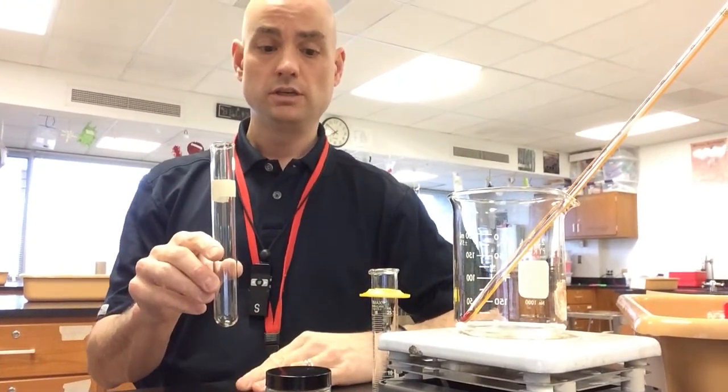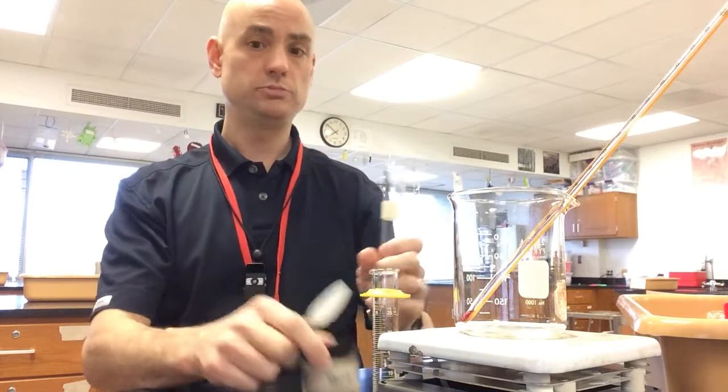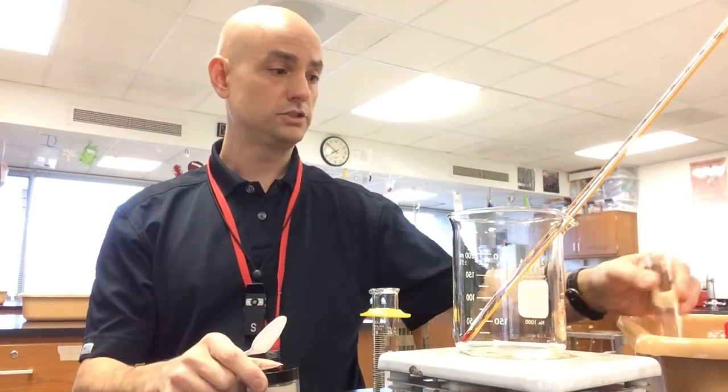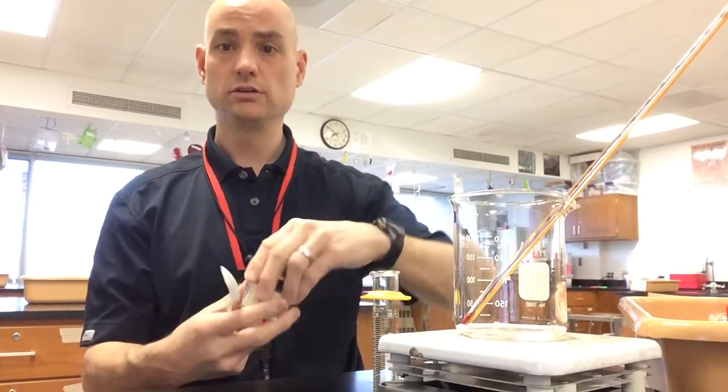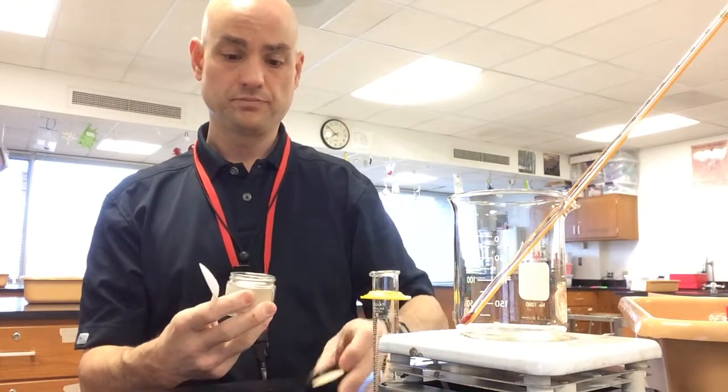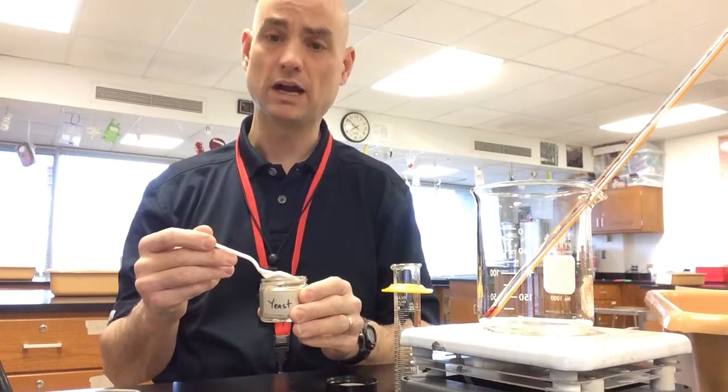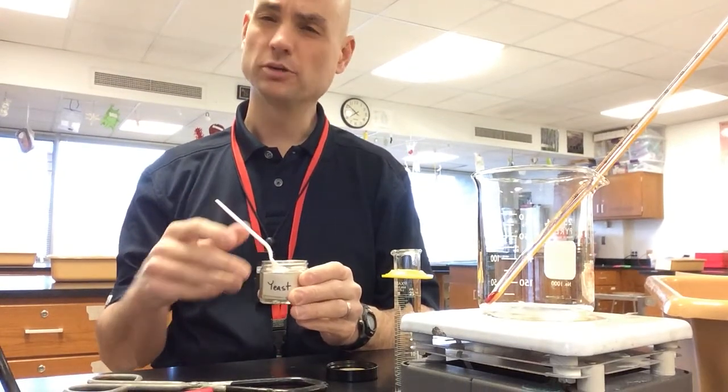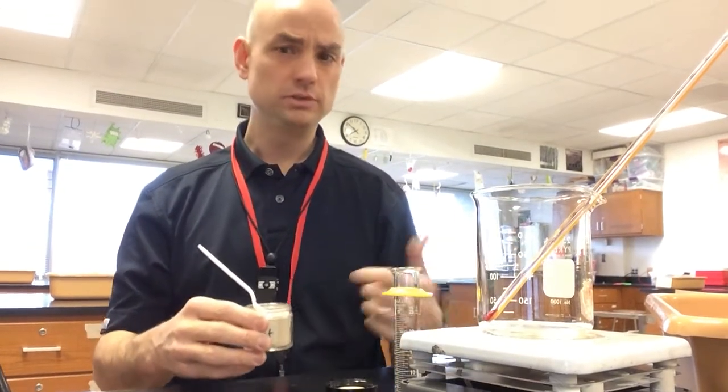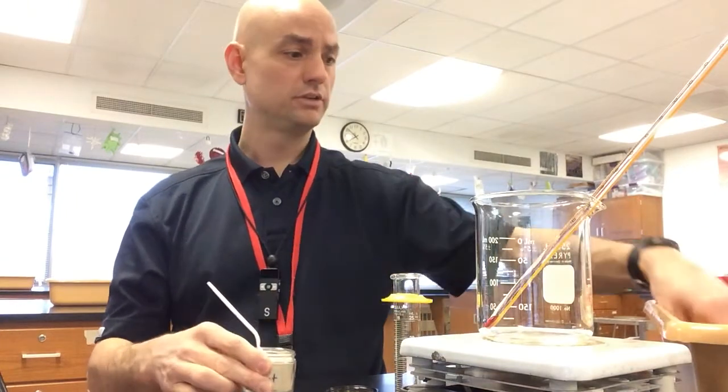The first thing you're going to need to do is to get one teaspoon full of yeast. So the yeast has got to be first because the yeast is dry and you're going to put a liquid in there. If you put the liquid in first and then the dry stuff, it will stick to the side of the tube and that's not what you want.